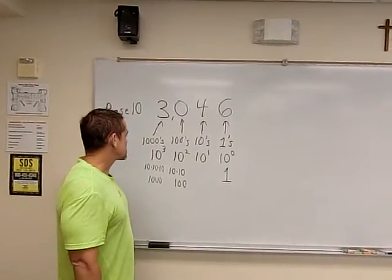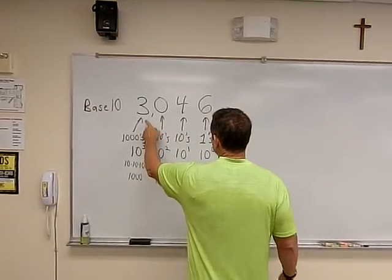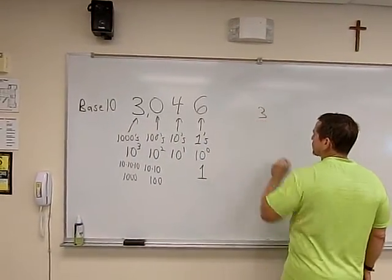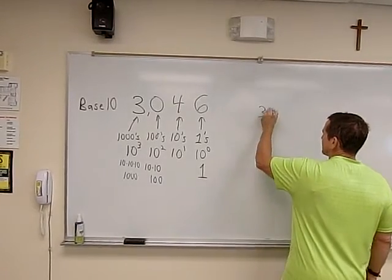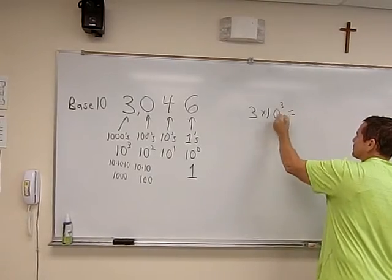So that's why this is three thousand and forty-six. Let's look closely. We've got the three, but the three is in the thousandth place. So we've got three times ten to the three, which is a thousand. So I get three thousand.